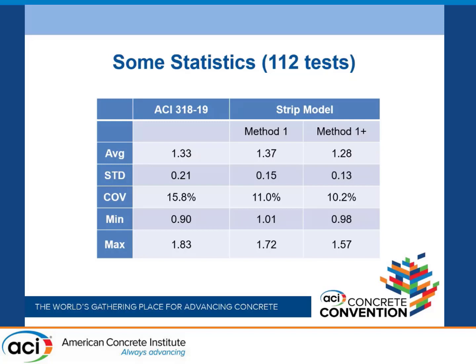The reason there's a method one is because there's a second method, method two. Method one and method two differ only in the way they account for plate torsion. Method one uses a slightly wider band of reinforcement to account for the enhancing effect of plate torsion. Method two tries to actually assess what the torsion loads are on the side face of one of those arch strips. The results are actually quite comparable — I thought method one was slightly better, but only slightly.